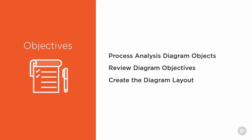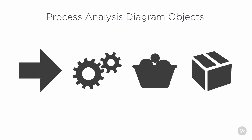In Process Analysis 360, we're going to be using four main types of objects in our example. First, we have Sources. This is basically anything that comes into the receiving area of your factory. It could be raw materials such as tubing or sheet metal, or it could also be purchased components.